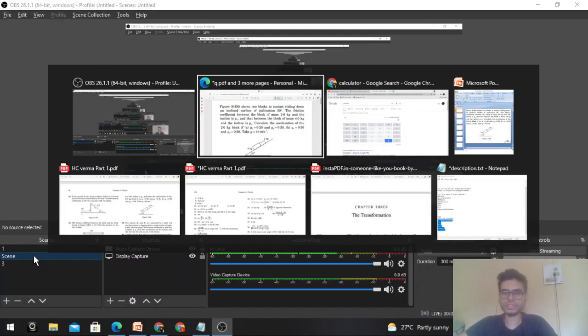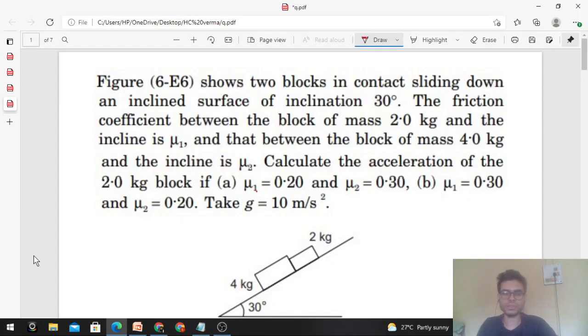Okay, hi everyone. So today let's discuss one interesting problem from HC Verma. The figure shows two blocks in contact sliding down an inclined surface of inclination 30 degrees. The friction coefficient between the block of mass 2 kg and the incline is mu1, and that between the block of mass 4 kg and the incline is mu2. Calculate the acceleration of the 2 kg block if (a) mu1 is 0.2 and mu2 is 0.3, and (b) mu1 is 0.3 and mu2 is 0.2.